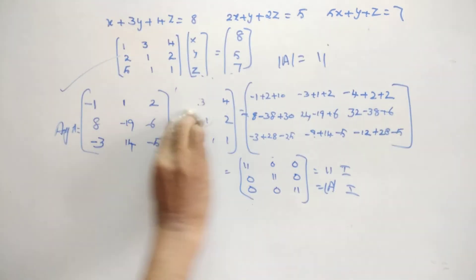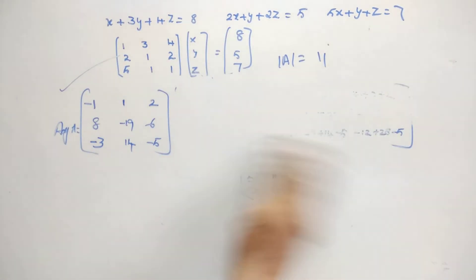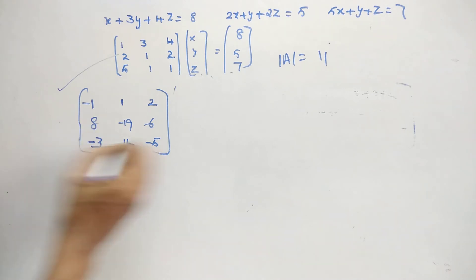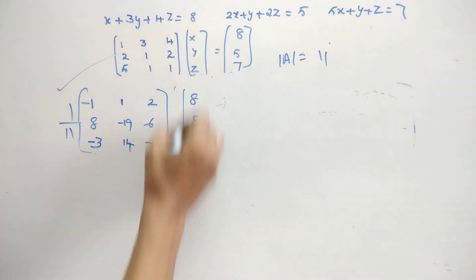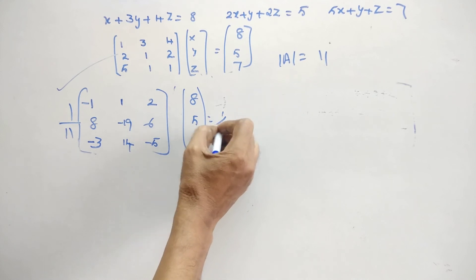Now how to find inverse? After finding adjoint matrix, inverse is nothing. All that you have to do is you have to put that 1 by determinant value. So A inverse is 1 by 11. That is your A inverse. Now how to solve the equations? Out of A inverse, you are going to multiply with B matrix. So here I am continuing that, 8, 5, 7, so 1 by 11.